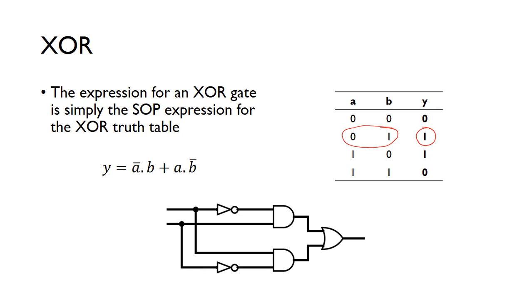So for this minterm here, we've got NOT A and B, and then for this next one in the truth table, we just get the minterm for that, so that's A and NOT B. So we just need to sum those together using an OR function. This gives us the SOP expression for an XOR truth table, so an XOR function.